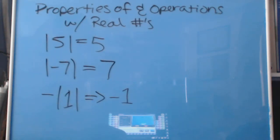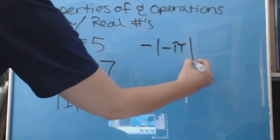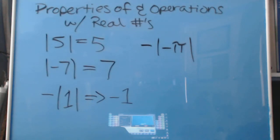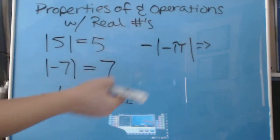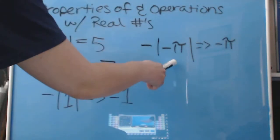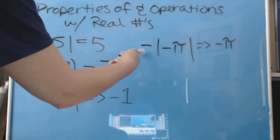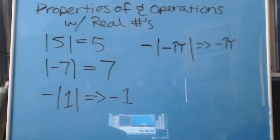Number 20 is really interesting. We've got a negative on the outside and negative pi inside — so it's the negative absolute value of negative pi. The absolute value of negative pi is pi, but since we still have that negative on the outside, the answer is negative pi. We have a negative amount of pie, and that makes me sad.